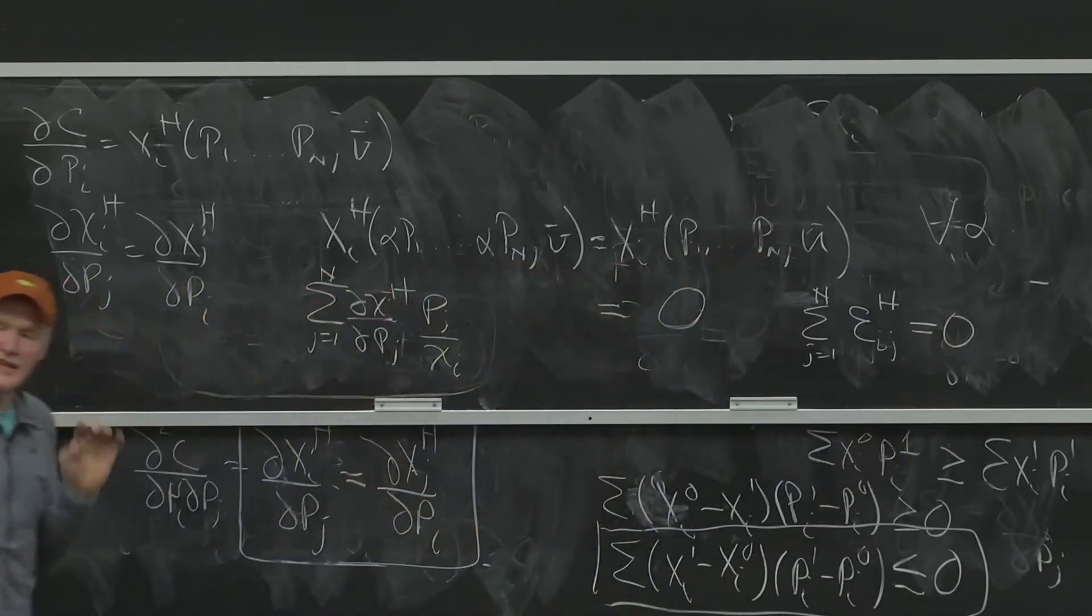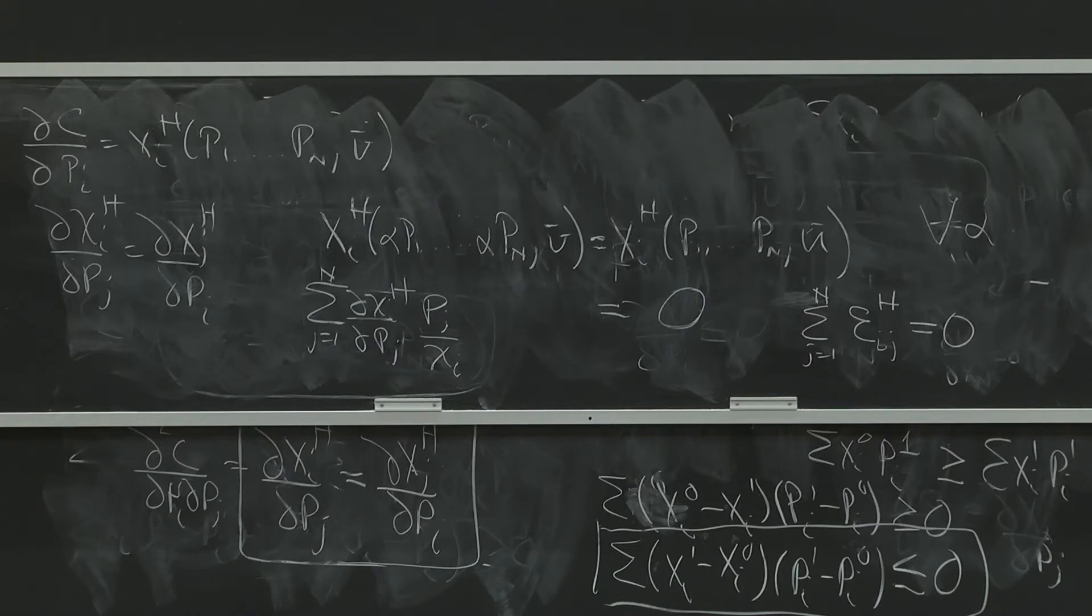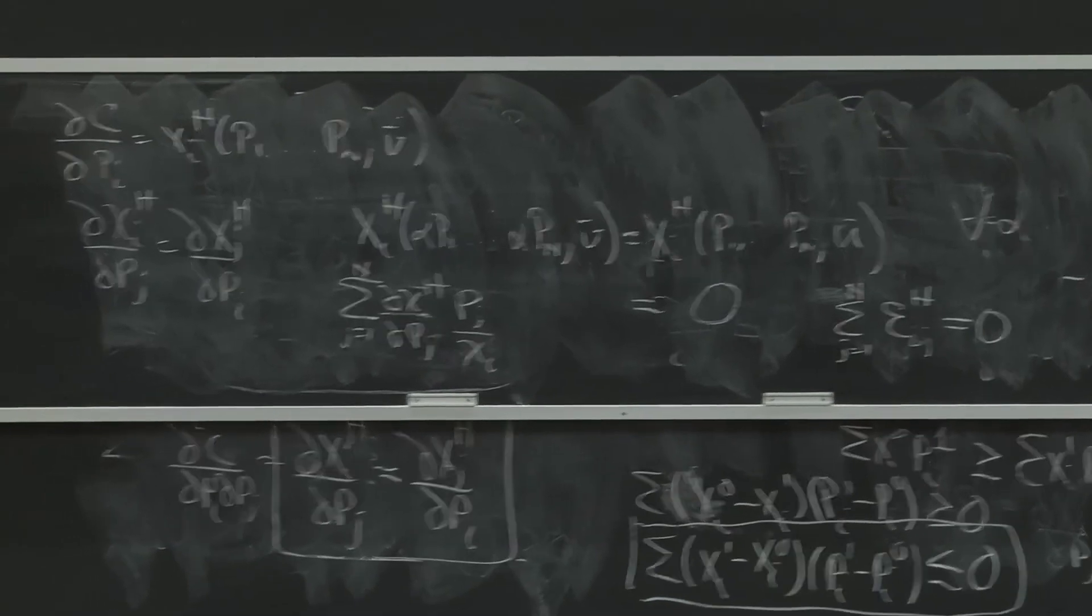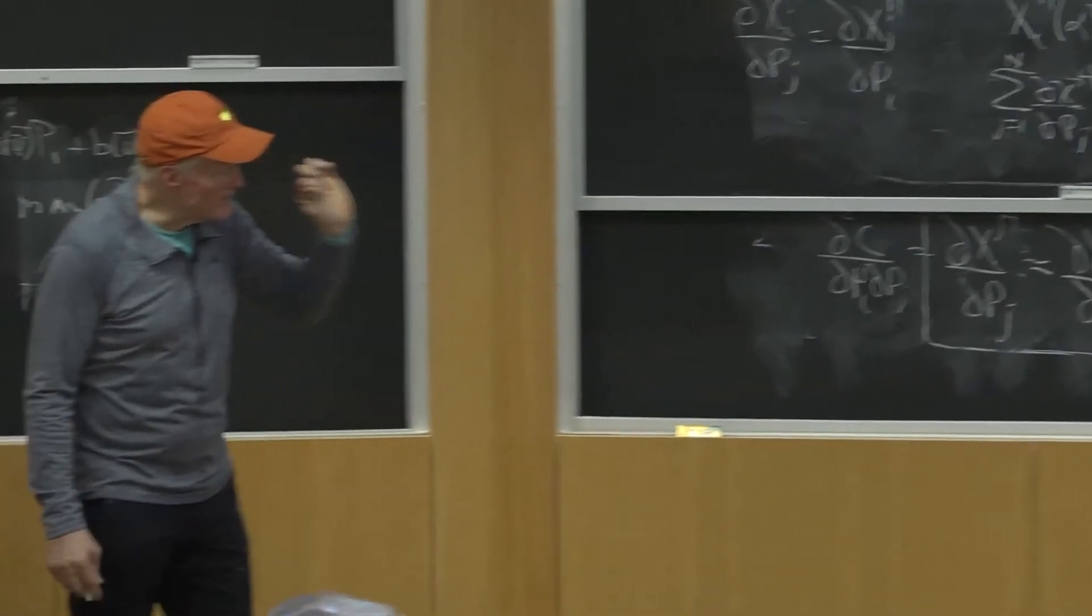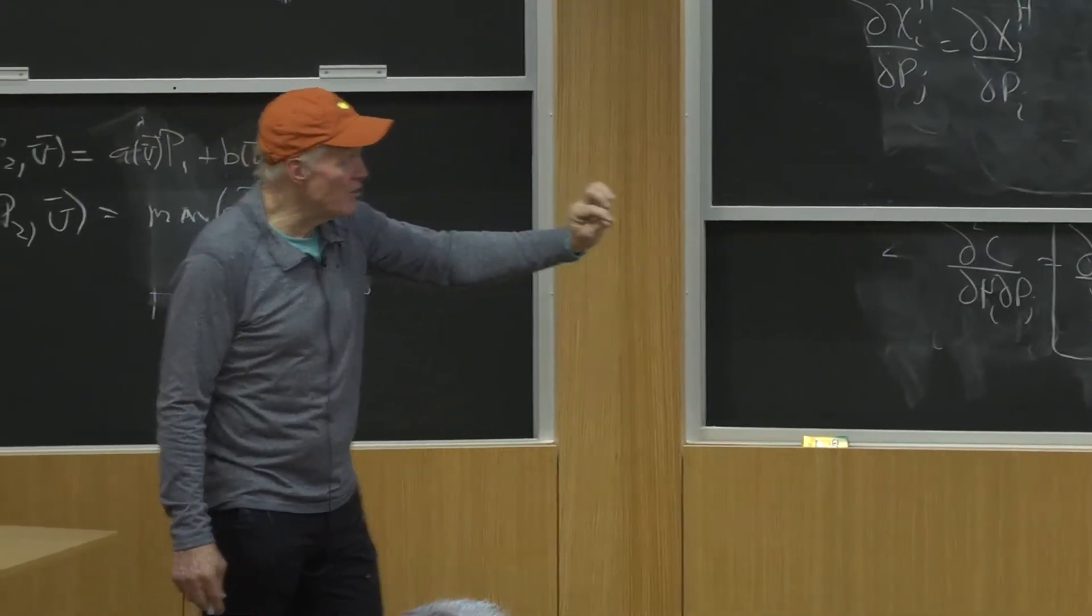That is, homogeneity tells me that if I look at all the price elasticities for a given demand equation, this is going across the different elasticities for a given equation.